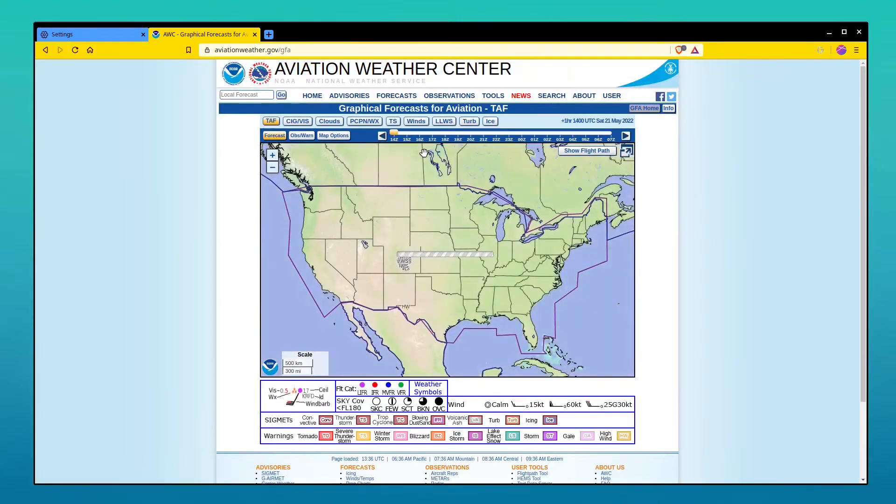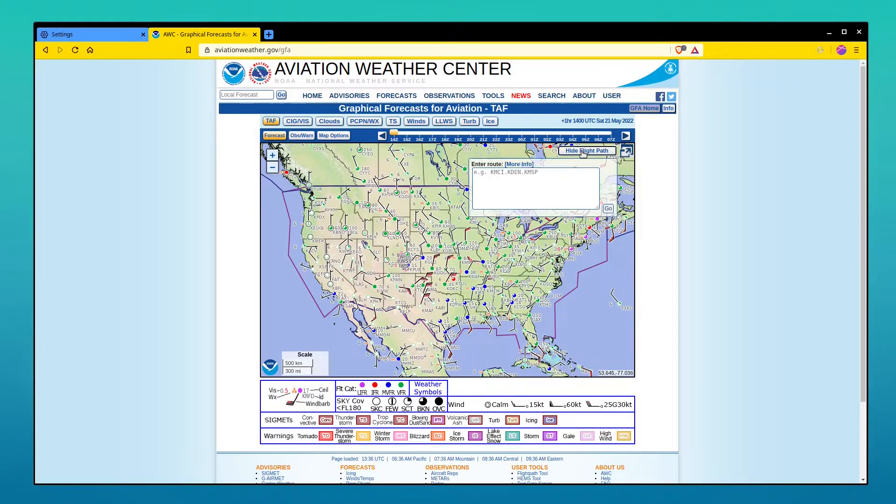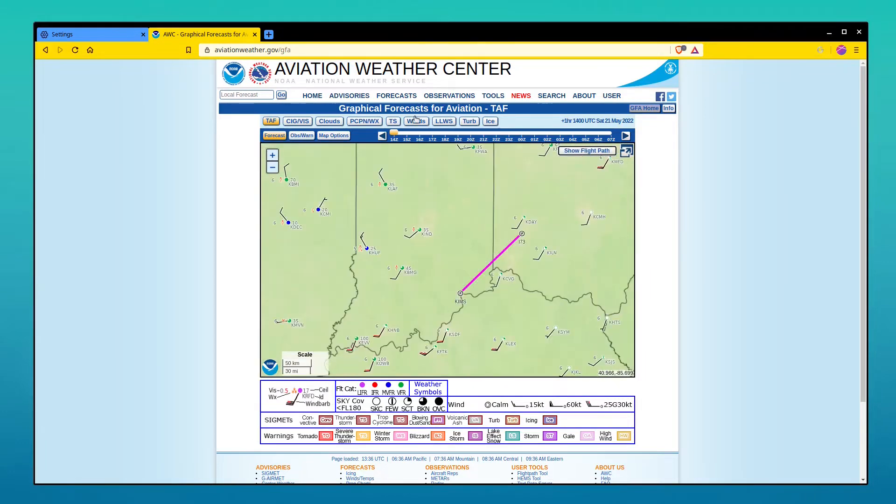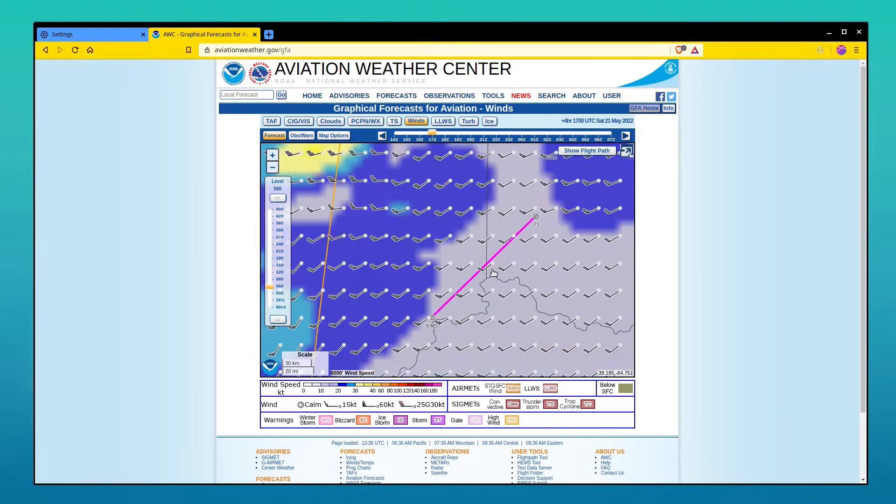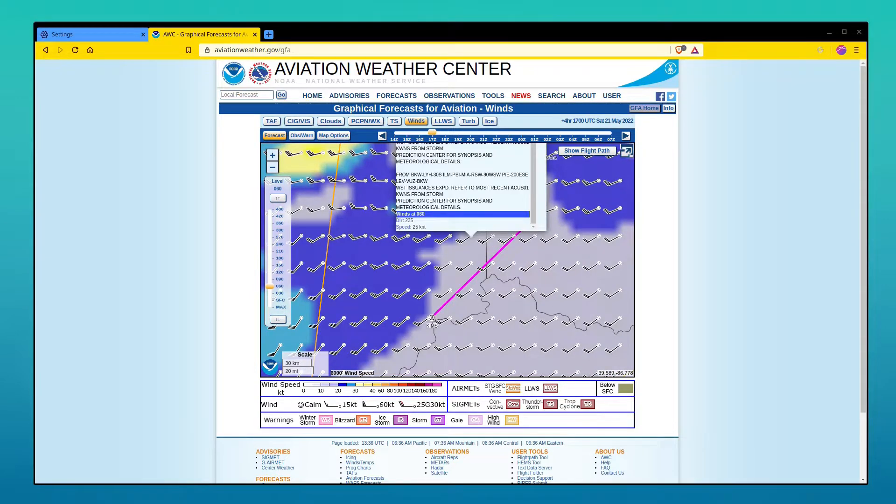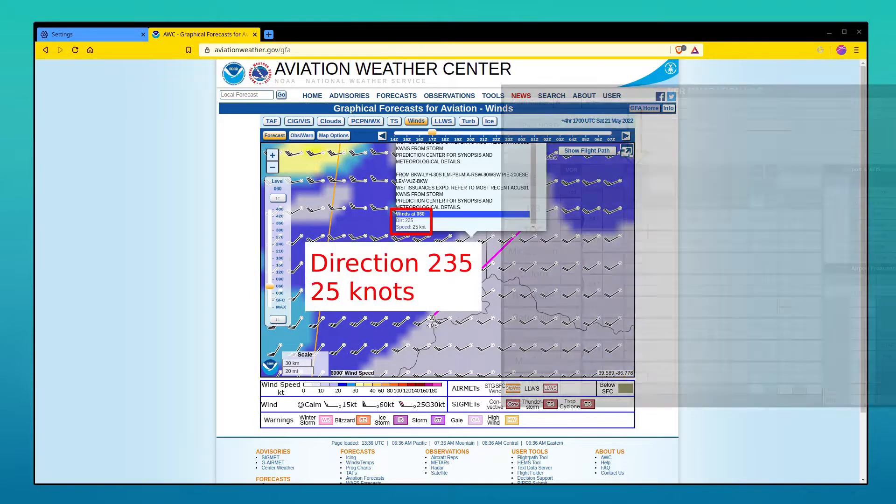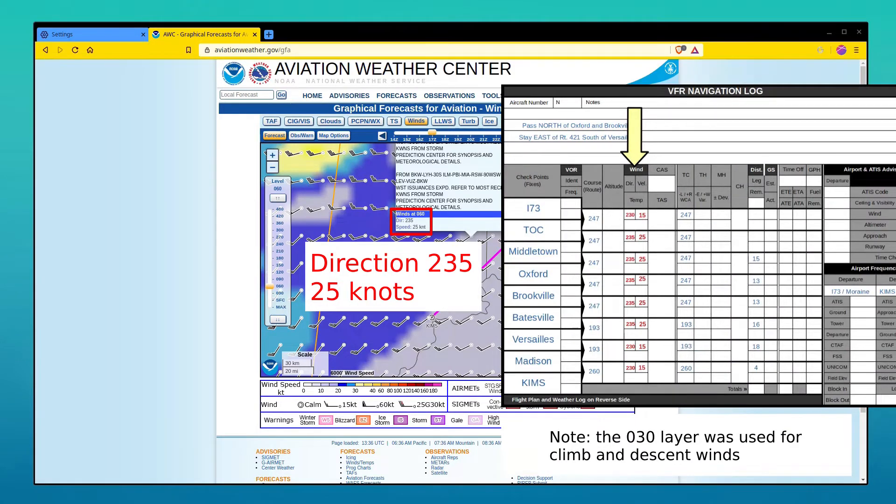We can get the winds aloft from the graphical area forecast. To do that, we enter our approximate flight path into the dialog, zoom in, select our departure time, and start clicking through altitudes until we find one that looks favorable. The winds are pretty similar across our entire route, so we'll use 235 at 25 for the entire trip.